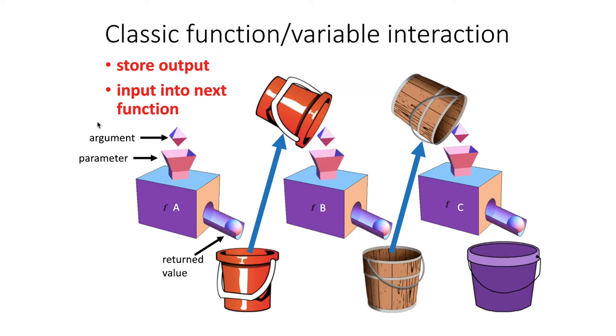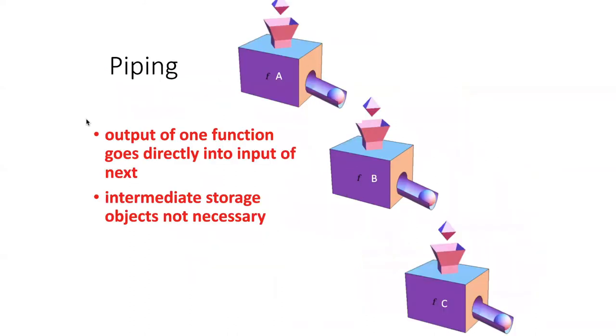The concept of piping basically eliminates these intermediate buckets. So instead of storing the output of the first function in a bucket, all I do is simply allow it to roll out and become the argument of the second function. The return output of the second function just pops right in as an argument of the third function and so on.